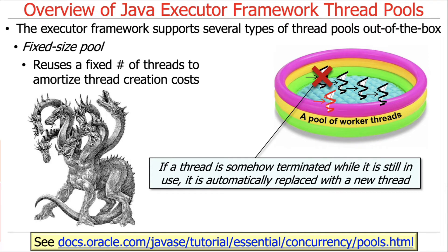If a thread is somehow terminated — for example, an exception is thrown in the task and the task didn't handle it — the executor framework is smart enough to create a new thread and keep the number of threads in the pool at that fixed size. It's kind of like the Hydra: you chop off a head and another one grows back.